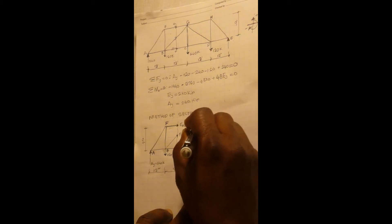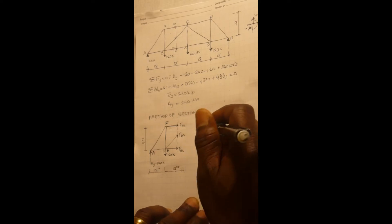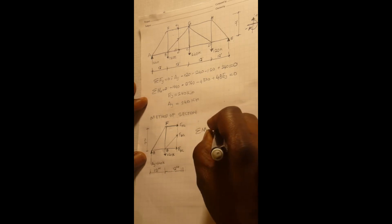So the sum of the moments at G will be zero and we'll have this 240 kip reaction at A